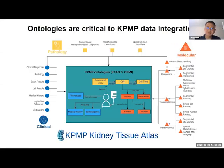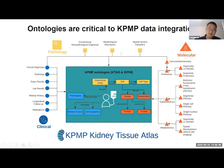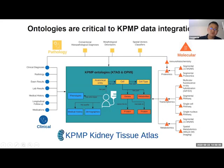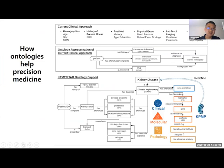This basically links pathology, molecular data, and clinical data together. Once you model one simple example using our strategy, you have all the background linked to you, and then you can use the same approach to model more and more examples. Our precision medicine method links clinical, molecular, and pathology data all together. We just had a paper accepted by Nature Review Nephrology introducing our framework and how ontologies support the KPMP project.